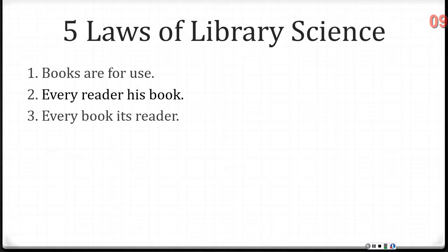The third law is every book its reader. This law addresses the need for the library to connect the user to the information that they need. Providing equipment and devices, as well as cataloging and classifying material in meaningful and systematic ways, serves to connect users to resources and information. If we have resources in our collections but don't make them findable because we don't have good catalog records, it makes it difficult to fulfill this law. Considering how users might access resources and information outside the walls of the library is also an important aspect.